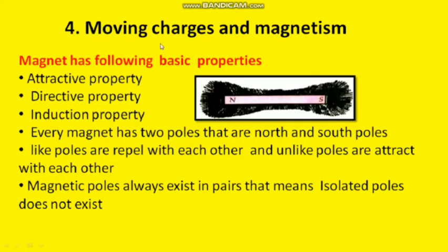In this chapter we are going to discuss about moving charges and their effects, and the relation between electricity and magnetism — how electricity produces magnetism. All these things we are going to discuss, including the relation between electricity and magnetism.